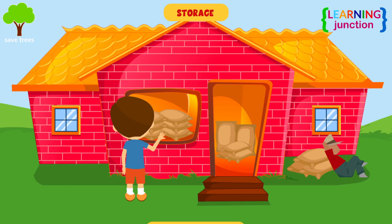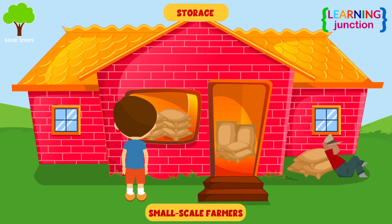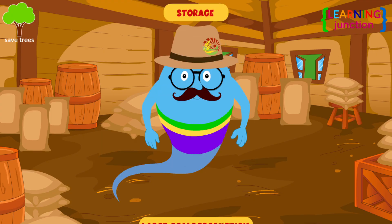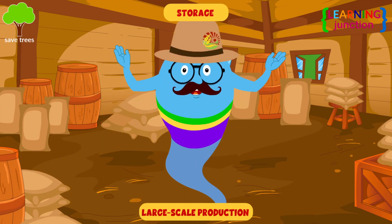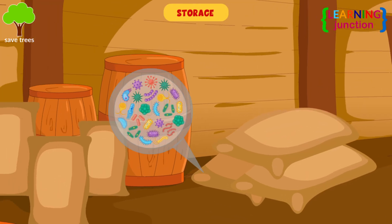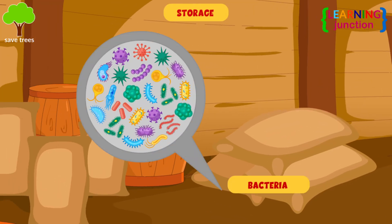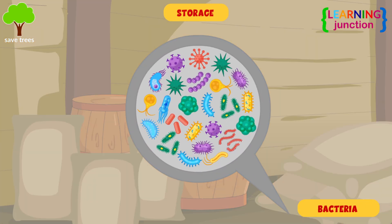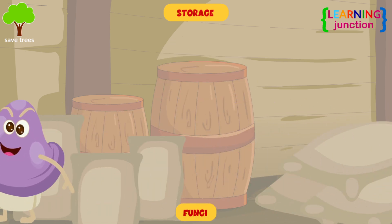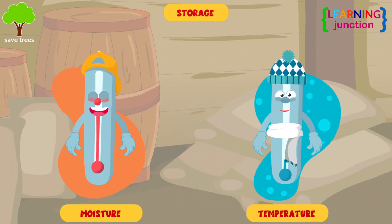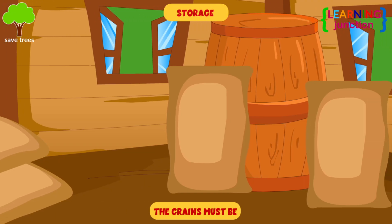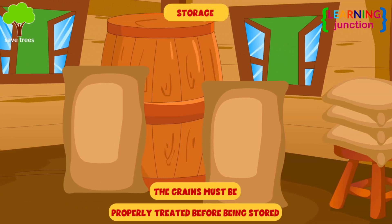Step 7: Storage. Small-scale farmers use the crop for their own consumption, whereas large-scale production is mostly used for marketing. The stored grains may be attacked by bacteria, fungi, and environmental factors including moisture and temperature. Therefore, the grains must be properly treated before being stored.